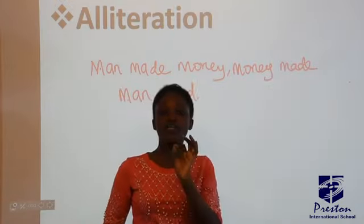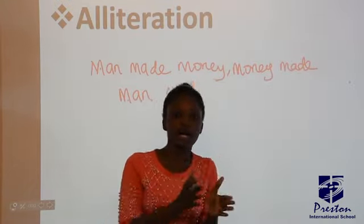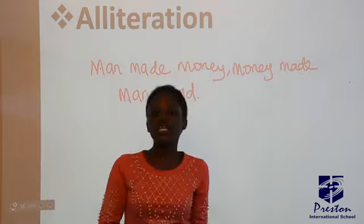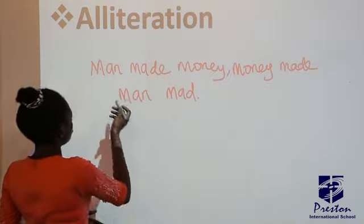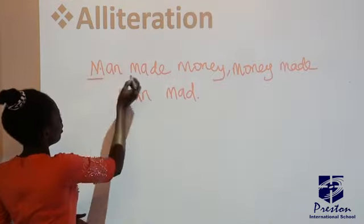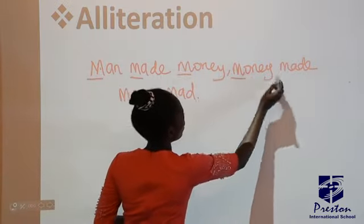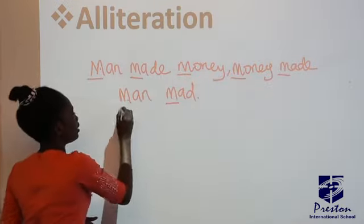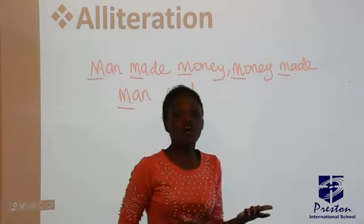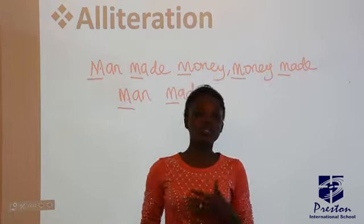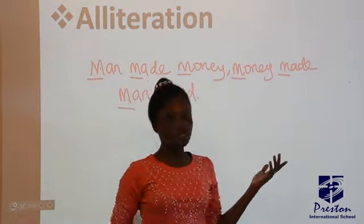How? You have the letter M — the sound 'ma' — at the beginning of all the words. So you have: ma, ma, ma, ma, ma, ma, ma, ma. This repeated initial sound is what makes it alliteration, and it will help you when you're composing your lyrics or your poem.